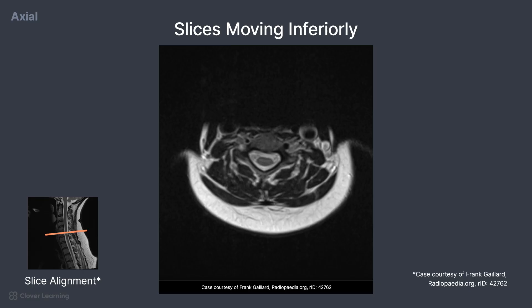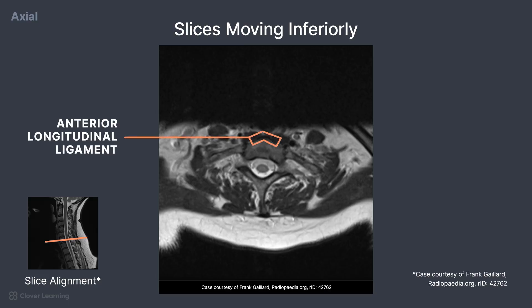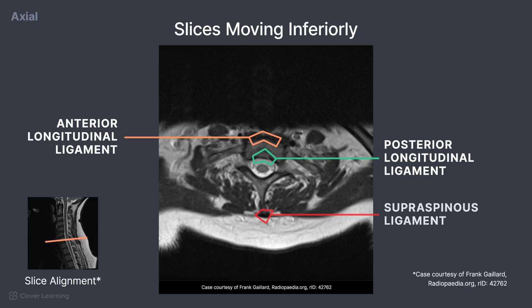As the slices continue inferiorly, this view demonstrates the lamina well. Remember, the lamina form together to protect the posterior aspect of the spinal canal. The vertebral arteries are demonstrated as well as the internal jugular veins. On this last slice, it's important to take note of the ligaments, as they are all well demonstrated here. The anterior longitudinal ligament is a dark area located on the anterior portion of the spine. The posterior longitudinal ligament is located on the posterior side of the vertebral bodies. The supraspinous ligament is seen on the most posterior portion of the spinous process. The ligamentum flavum connects the lamina to other lamina located superior and inferior, and forms a barrier on the posterior side of the spinal canal.